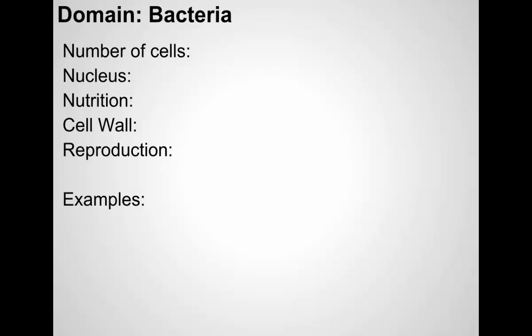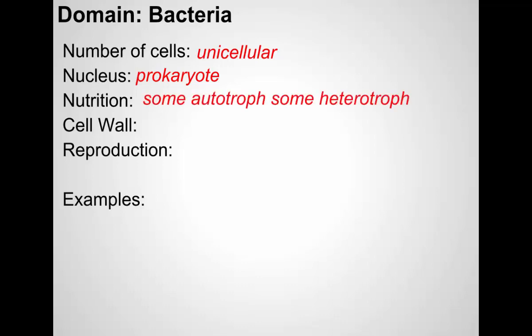So the domain bacteria — these are the prokaryotes. They're unicellular. They do not have a nucleus; they're prokaryotes. They still have DNA, but it's spread throughout the cytoplasm — it's not contained within a membrane. They also generally have no other membrane-bound organelles. Some bacteria are autotrophs, some are heterotrophs. Again, that's why classifying things based on their nutrition is really not the best way to do it.